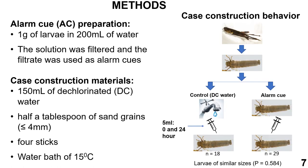To initiate case construction, larvae were removed from their old cases by probing them in the abdomen and separated into two treatment groups: a control group that received chlorinated tap water, and an alarm cue group that received the alarm cue treatment. Larvae received 5 ml of their respective treatments at the beginning of the experiment and after 24 hours. Larvae used were of similar sizes — there were 18 larvae in the control group and 29 in the alarm cue treatment.